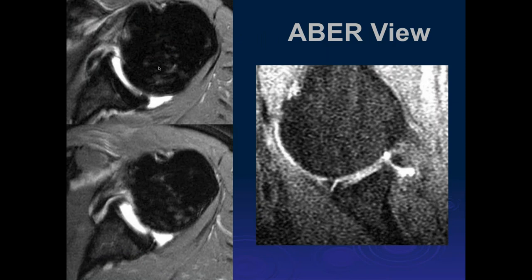Regarding the ABER view: you put in contrast, do the regular scan, then reposition the arm above the head and re-image with a slightly larger field of view. On the regular study we don't see an anterior labral tear, but in the ABER position we can see contrast extending through the anterior labral tear. However, out of 200 studies, this is only one of a couple of patients where we saw pathology on ABER that we didn't see on the regular view. If it's a high-level young athlete, the ABER view is probably worthwhile.